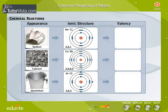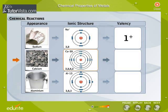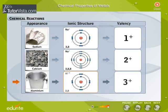Metals have a valency range from 1 to 3. This means that metals can lose 1, 2, or 3 electrons from their valence shells.